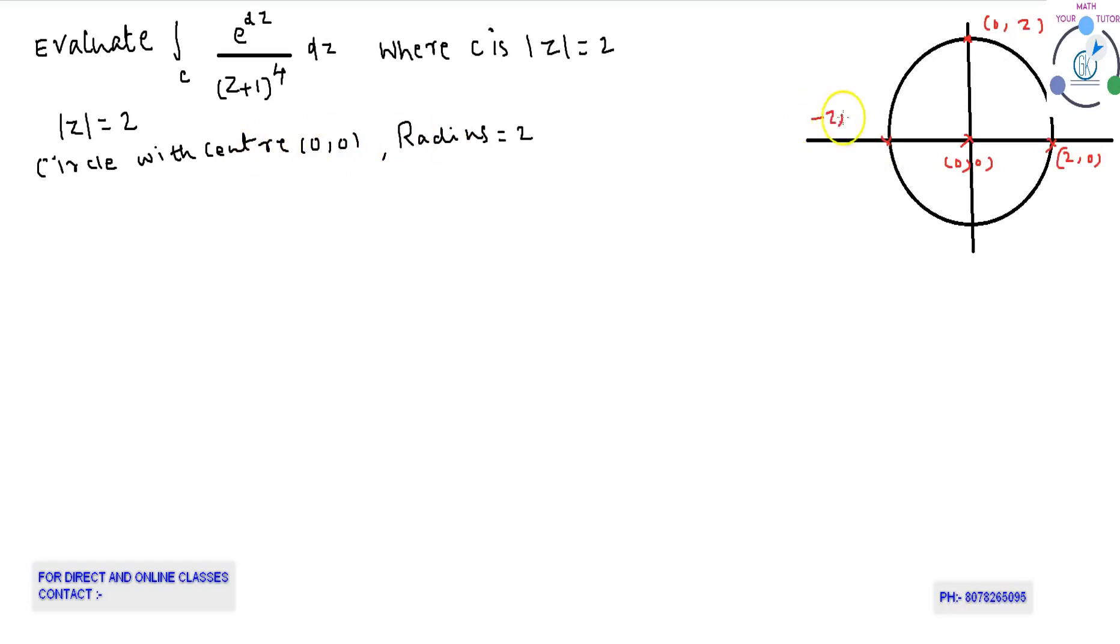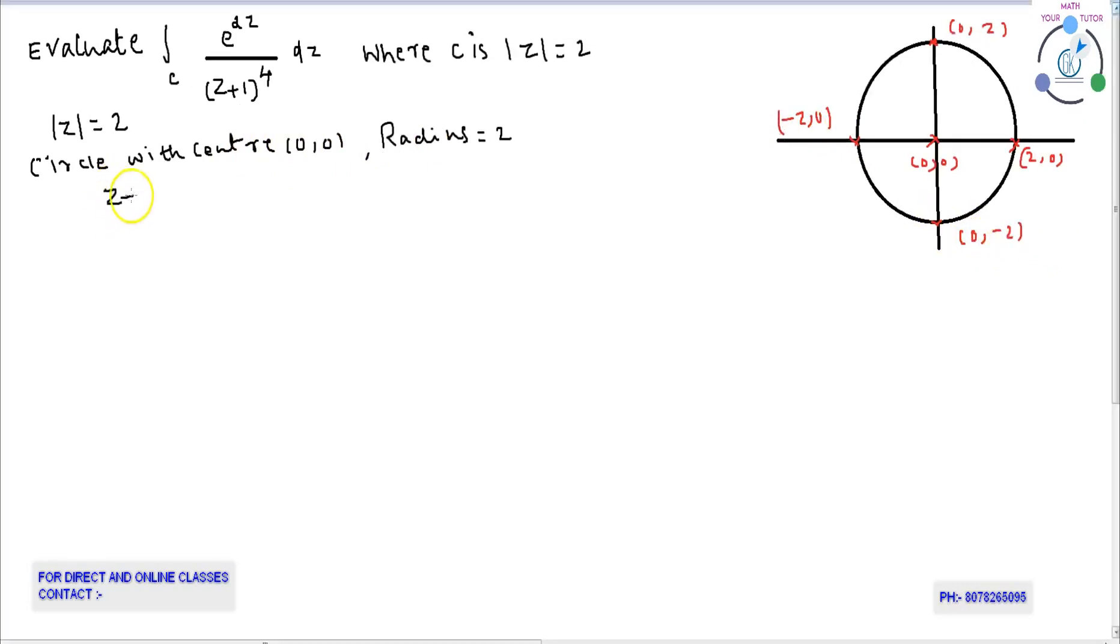Mod z equal to 2 can be graphically represented as shown in the figure. Let us equate z plus 1 equal to 0, then z equals minus 1. We know that z equals x plus iy, which equals minus 1 plus 0i.